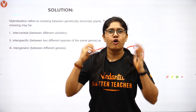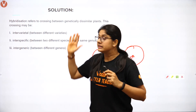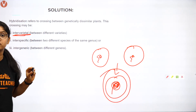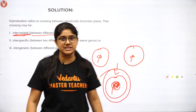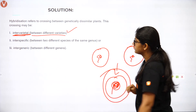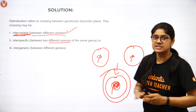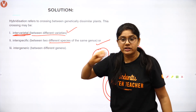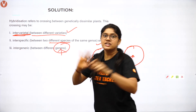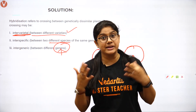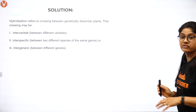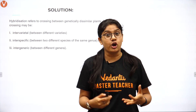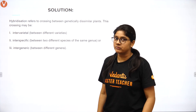Hybridization means mixing the genetic material of two different varieties and getting something new out of it. There are three different types. First is intervarietal — involving different varieties of the same species. Second is interspecific — involving different species, for example a donkey and a horse, but of the same genus. Third is intergeneric — where two completely different genera of animals or plants are mixed together to give a result. This is hybridization — a very commonly asked question.